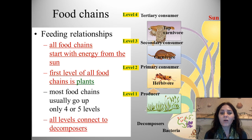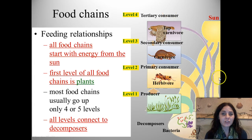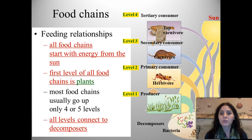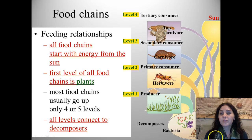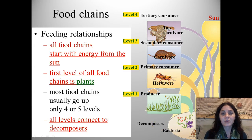And at all levels, decomposers are breaking down dead or decaying matter. So decomposers break down the producers, and the primary consumers, and the secondary consumers. Even the top carnivores, once they die, begin to be decomposed by fungus and bacteria. That's one of the huge roles, or one of the niches, that bacteria and fungi play in food chains, food webs, and ecosystems.